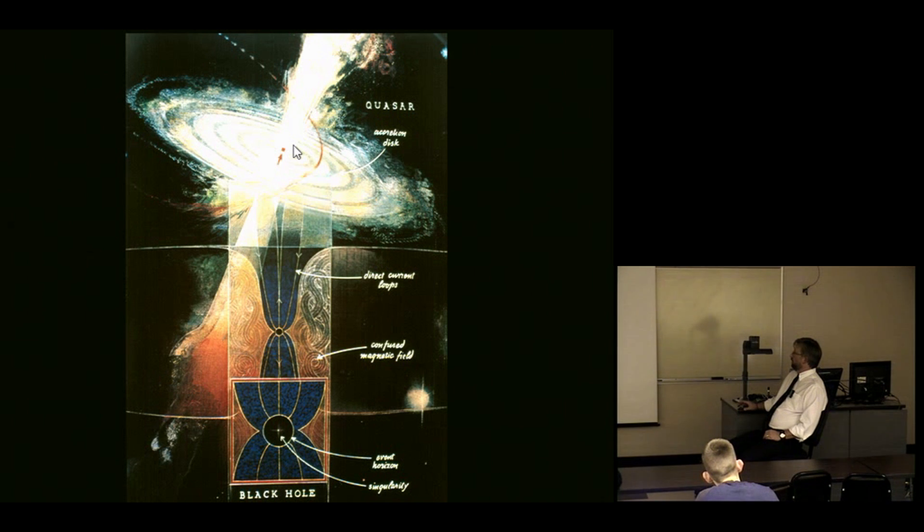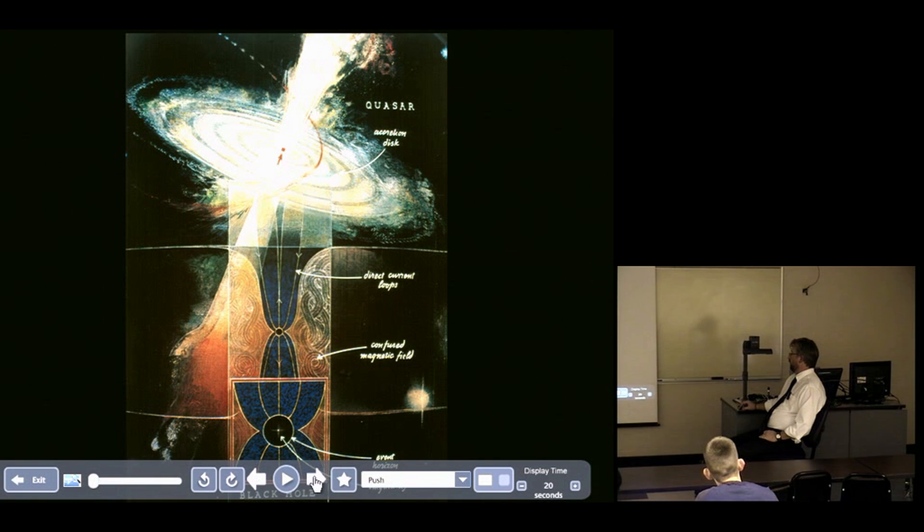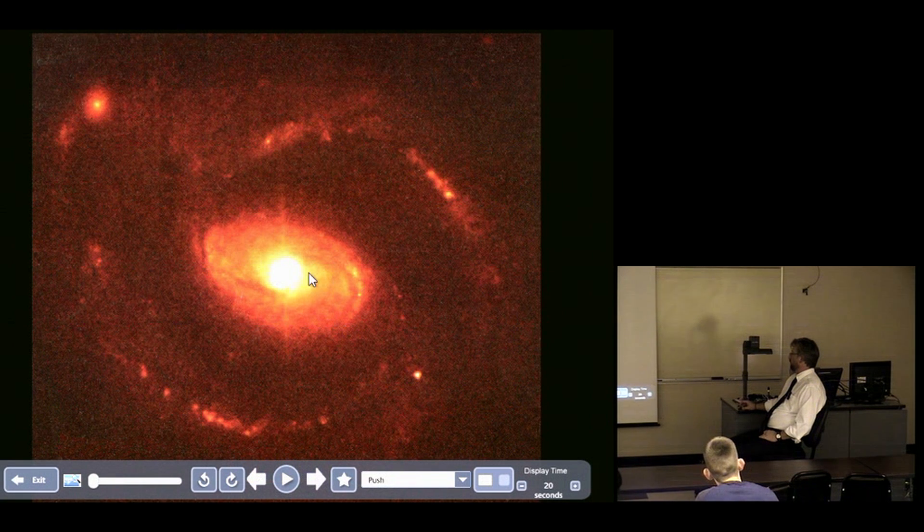The problem was we couldn't see a galaxy because we were looking through all the crud in our atmosphere. But when we got the Hubble Space Telescope out there, we could test that theory for the first time. What they discovered was that around these quasars, that's a quasar, what do you see? A galaxy.